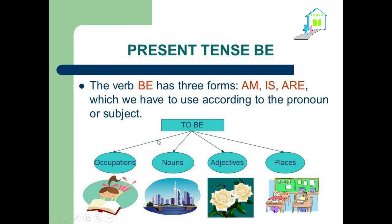We can use the verb to be to talk about occupations and jobs, like teacher, doctor, dentist, vet, etc. We can also talk about nouns like tables, doors, cities, villages, etc. We can also use it with places: classroom, house, school, hospital, clinic, etc.